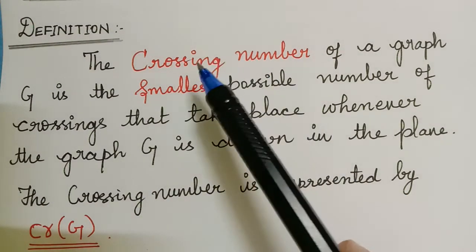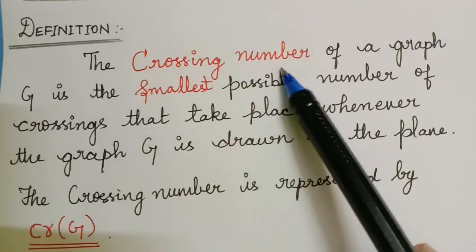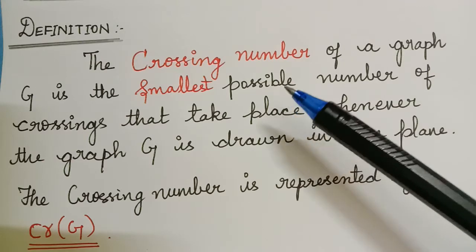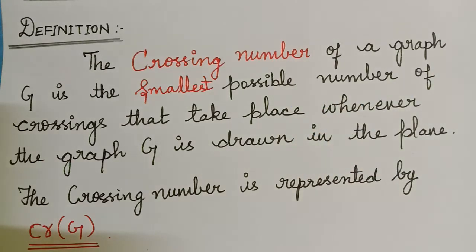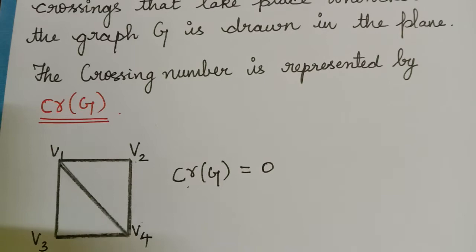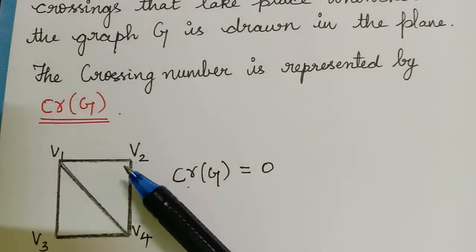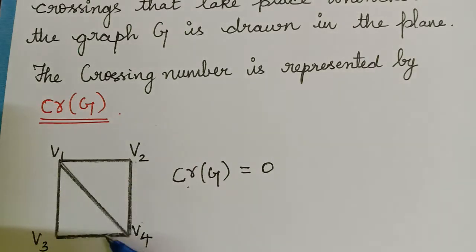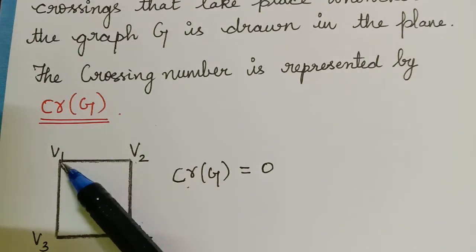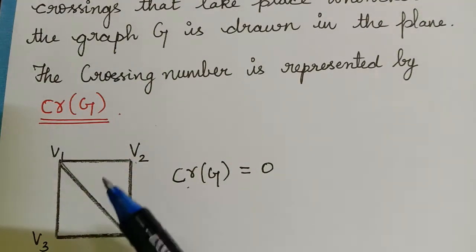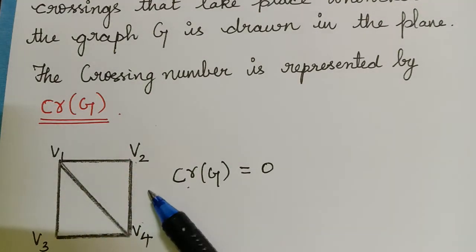In order to learn about crossing number, first we should know what is a planar graph and a non-planar graph. A planar graph is the one in which the edges meet only at the point of the vertices — wherever we have vertices, there alone the edges meet. So this is a planar graph.